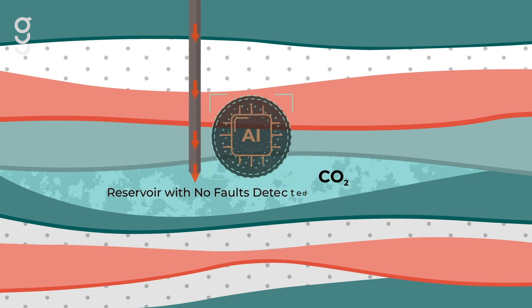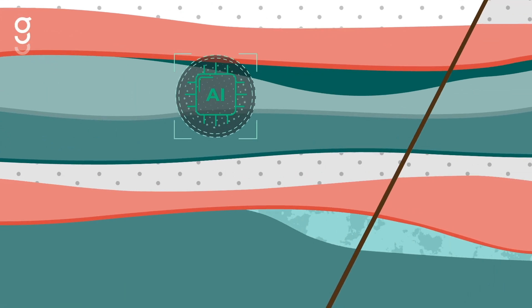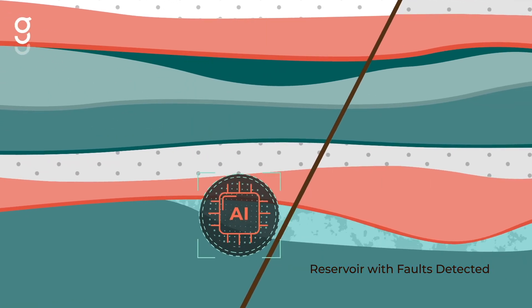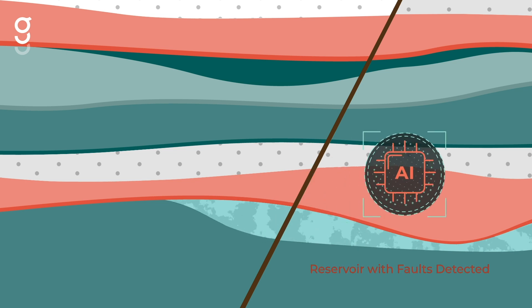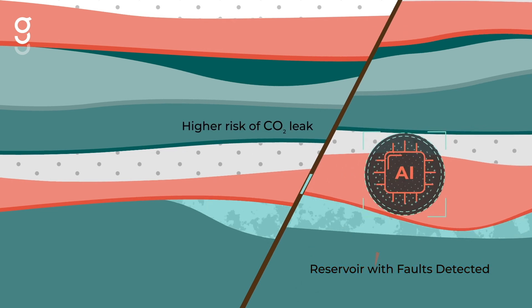GeoTeric's AI fault detection network was used to map the Southern North Sea to identify faults rapidly. Such faults could compromise a structure's integrity for carbon dioxide storage.